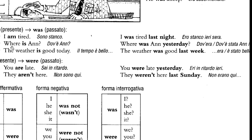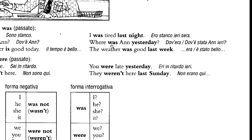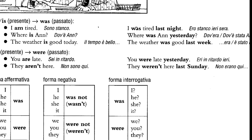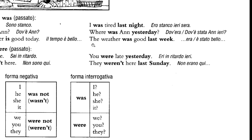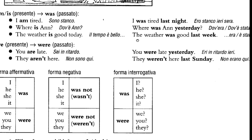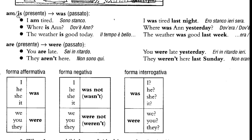Also, 'where is he?' becomes 'where was he yesterday?' — 'dove era, dove è stata, ieri'. And the third example: 'the weather is good today' — 'il tempo è bello oggi' — becomes 'the weather was good last week' — 'era, è stato bello, fu bello la settimana scorsa'. So whenever you have 'am' or 'is', it becomes 'was', but if you have 'are', it becomes 'were'.